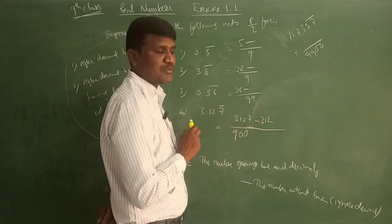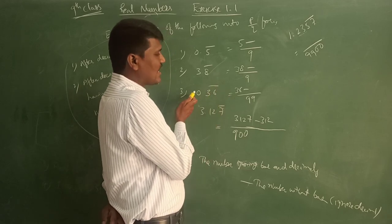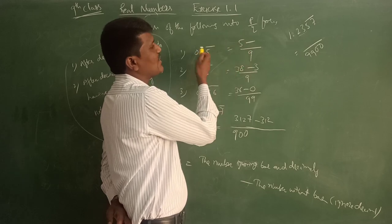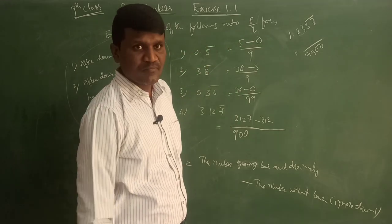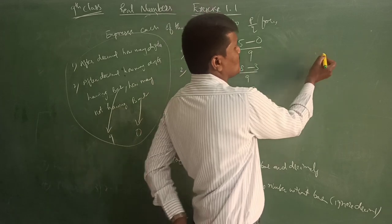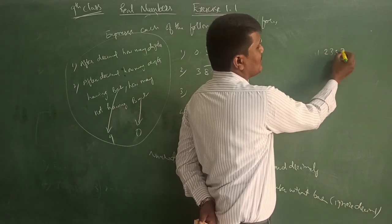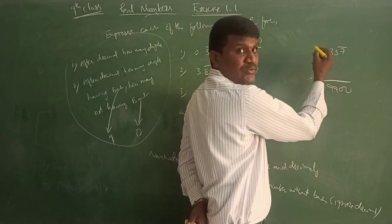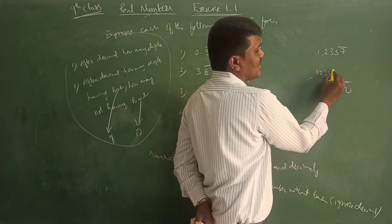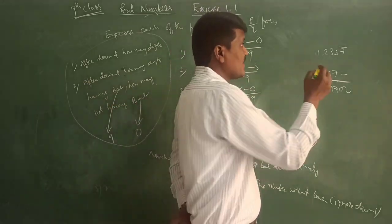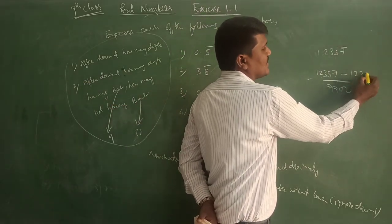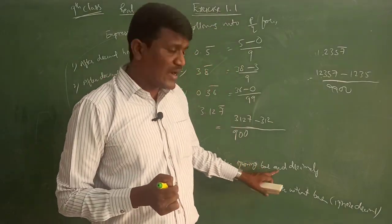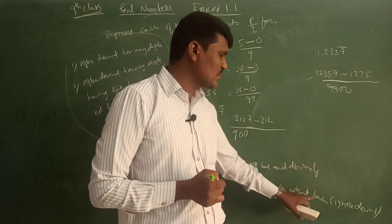And the number without bar - bar is on 7 here, so that number is 312, so 312 minus 312. Here 36, bar is not there, so it's 0. Here 38, bar is not there, so it's 3. 5 minus, bar is not there, so 0. Suppose if a digit is there before, we would write that. Otherwise, the numerator would be like this.